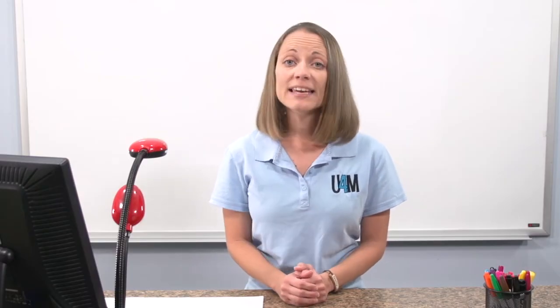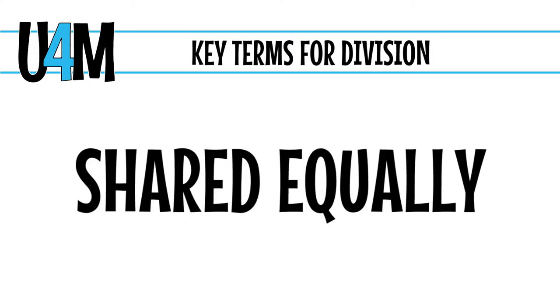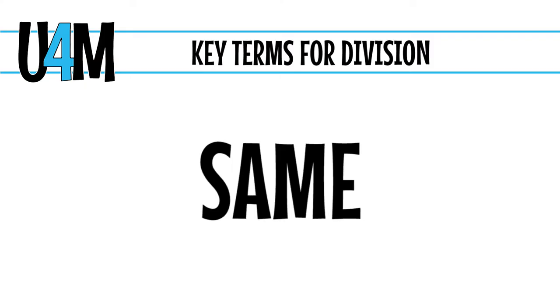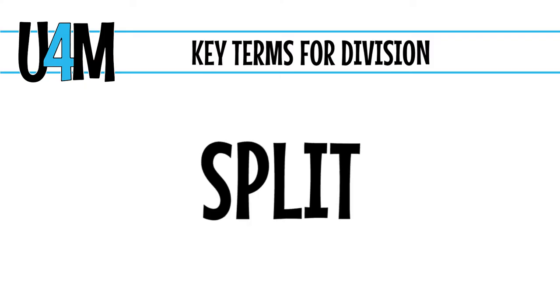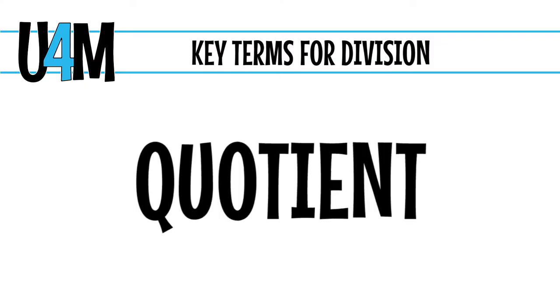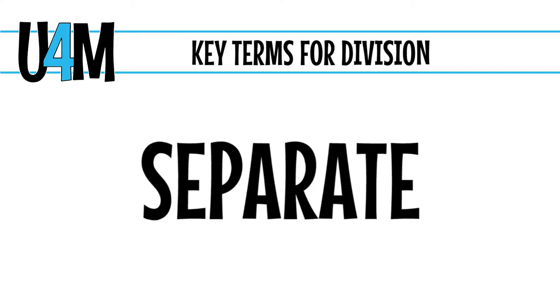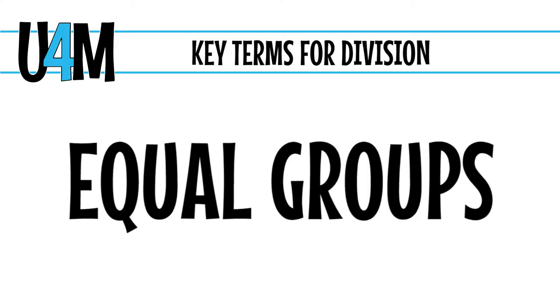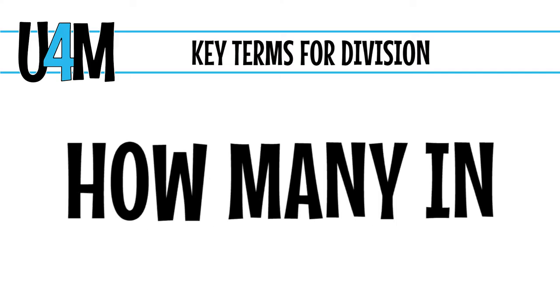The last set of terms we'll be looking at will be those for division. Key terms for division include shared equally, half, same, split, quotient, divide, separate, equal groups, and how many in or on each. Those terms clearly indicate that we're splitting or separating into equal groups.